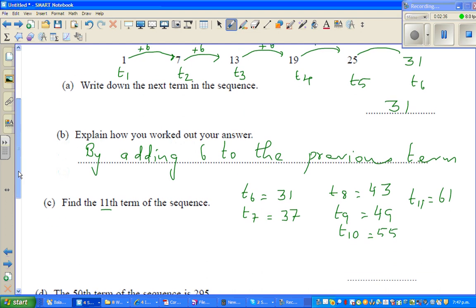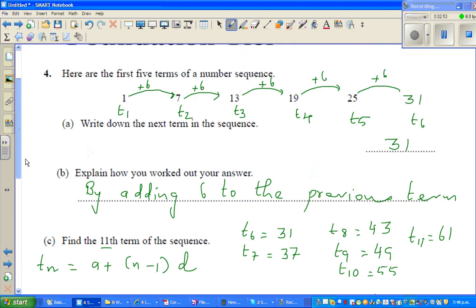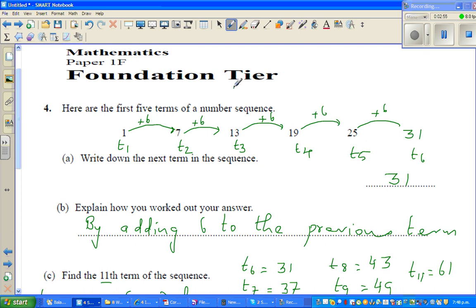There's a formula. The formula is like this: Tn is a plus n minus 1 times d, where a is your first term. So your first term is 1, d is the common difference, and the common difference is 6 here.